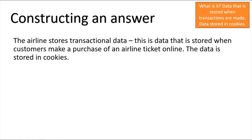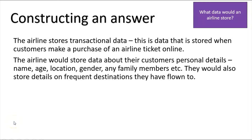Here's my possible answer. Taking my first point from the plan: 'The airline stores transactional data. This is data that is stored when customers make a purchase of an airline ticket online. The data is stored in cookies.' That's my first point from the plan covered.